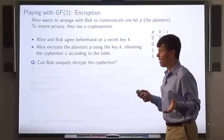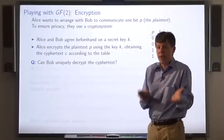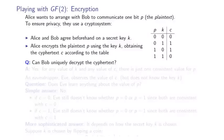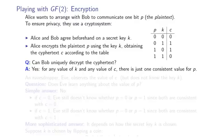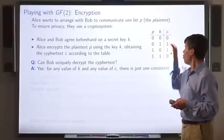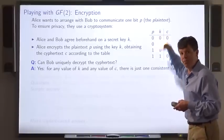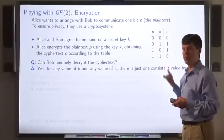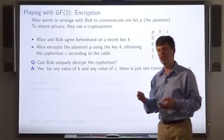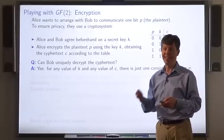Once Bob receives that ciphertext, can he figure out what the plain text is? Well, he knows k, the key, and he receives the ciphertext. Now, for any particular value of k and any particular value of c, there's only one value of plaintext that's consistent with those. So Bob can determine what plaintext was intended by Alice.